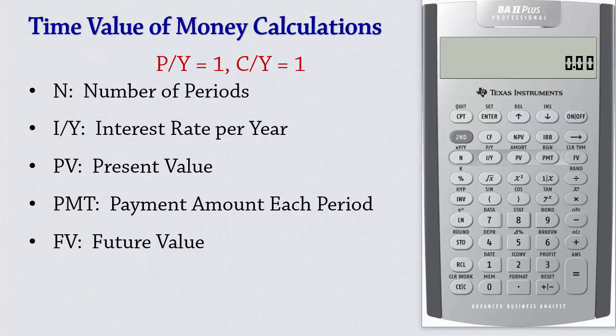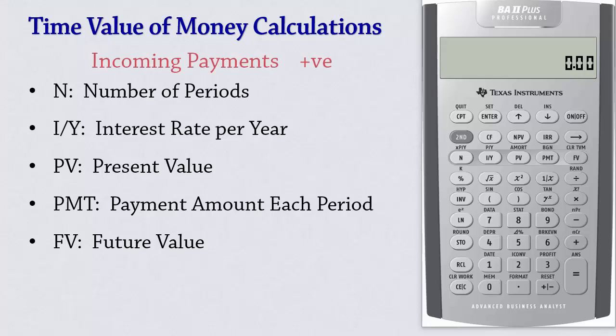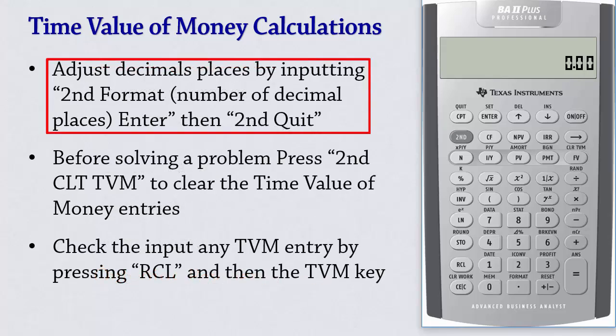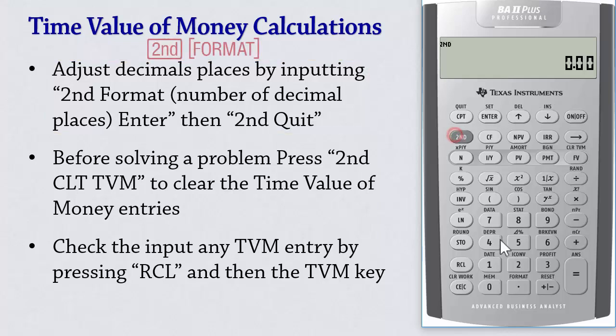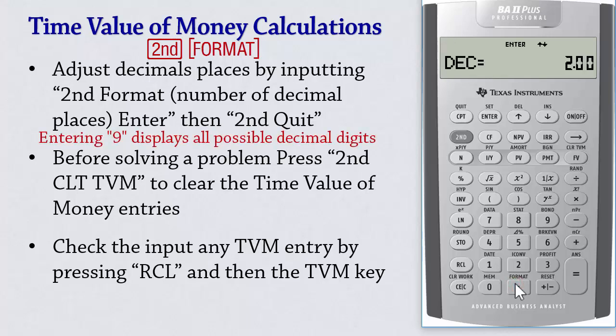If you plan on changing them, please see other videos posted on this channel. We will enter incoming payments as positive and outgoing payments as negative. You can change the decimals to your desired number of decimal places by pressing 2nd Format. You can choose 9 to display all decimals, but I will leave it at 2.